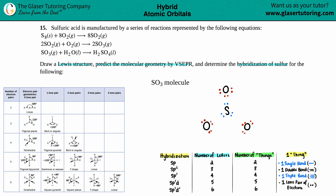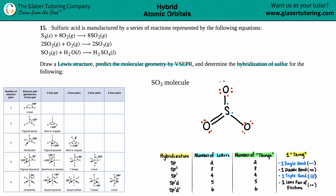Everybody gets a single bond first, then we check for the octet rule. This oxygen doesn't have the octet yet — it has 7 electrons — so I need to form a double bond. Same thing with the second oxygen: I need a double bond to give it an octet. And the third oxygen needs a double bond as well. Sulfur can have an expanded octet with a maximum of 12 electrons, and that's exactly what it has here: 2, 4, 6, 8, 10, 12. So we're good. First part is done.